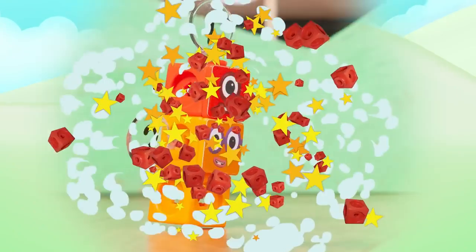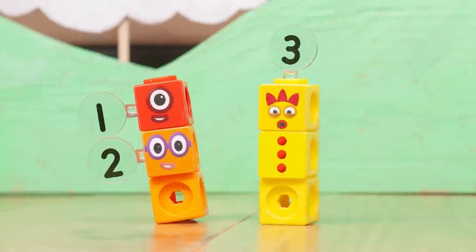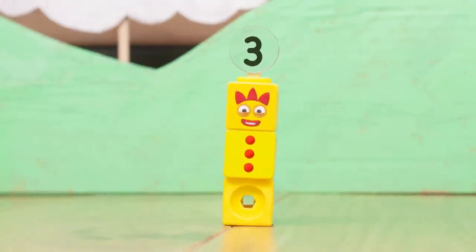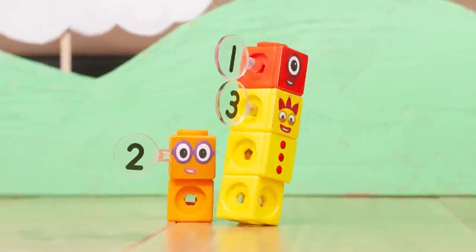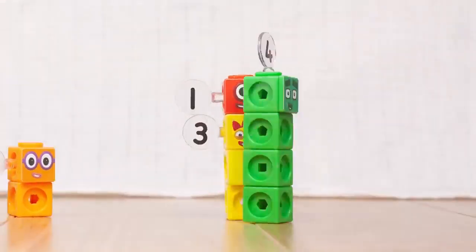2 plus 1 is the same as 3. Both of you can hide behind me. 3 plus 1 is the same as 4. I can hide you both for sure.